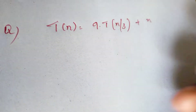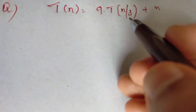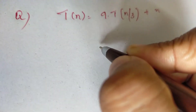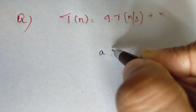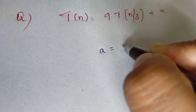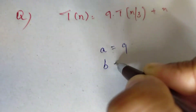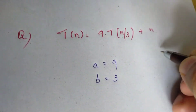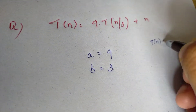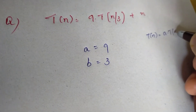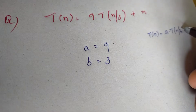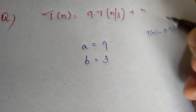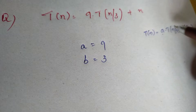Then, we take the value of the constants. The value of a and b: so, the value of a times b is 3.